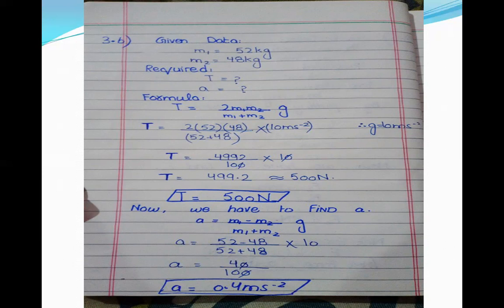From page 65 of your textbook, the formula for tension is: T equals 2·m1·m2 divided by (m1 plus m2), multiplied by g. Putting in the values of m1, m2, and g, then simplifying, the value of tension is 500 N.